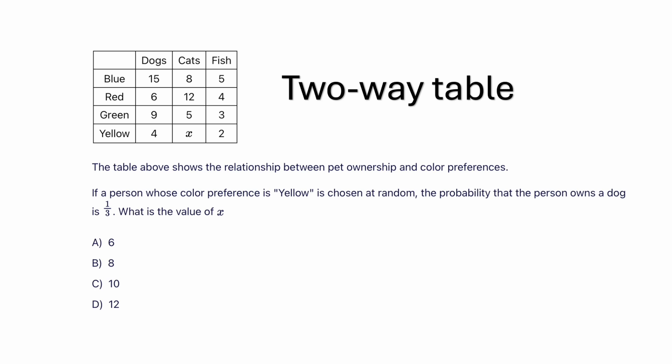The variable pet ownership is on the top and is represented by the columns. The second variable, color preference, is on the left side, and its categories are represented by rows. You can see how each variable relates to each other. For example, people who prefer blue tend to own more dogs than cats or fish. Now let's get into the problem.